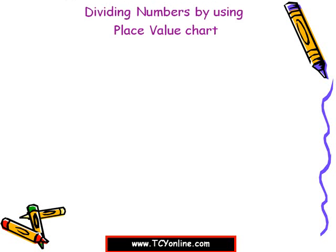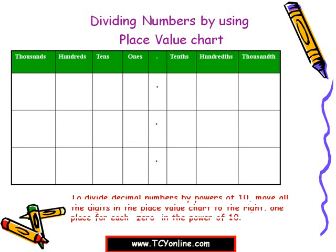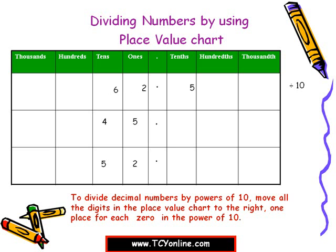Now let's see how to divide numbers using a place value chart. Always remember: while dividing a decimal number by powers of 10, move the digits in the place value chart to the right — one place for each zero in the power of 10. For example, dividing 62.5 by 10: move each digit one place to the right. 6 at tens moves to ones, 2 at ones moves to tenths, and 5 at tenths moves to hundredths.